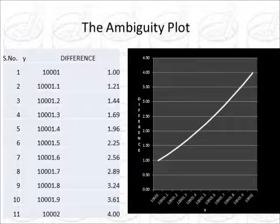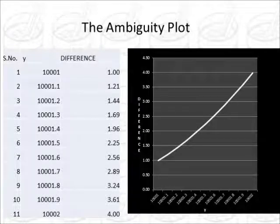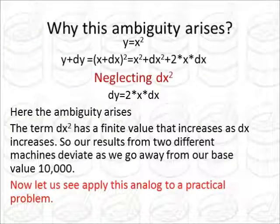And if you are smart enough, you might have already seen this: that if we go away and away from 10,000, the difference between the outputs of these two machines go on increasing, as I have shown in this plot. Now, why does this ambiguity arise? The reason is very simple.